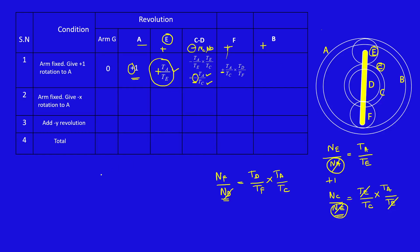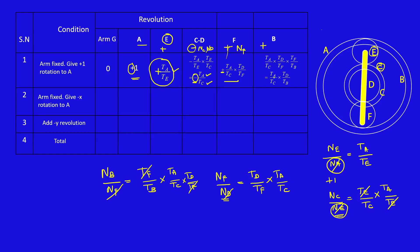Finally, nb: nb touches nf, so nb/nf = tf/tb. Substituting nf = (ta/tc)×(td/tf), and cancelling tf on both sides, we get nb = (ta/tc)×(td/tb). We retain the plus sign. This completes the first row of the table.